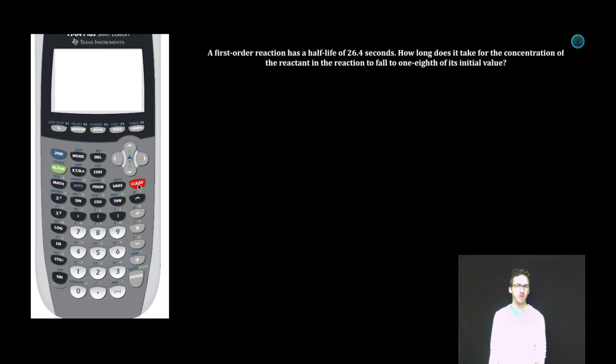Example number two. A first-order reaction has a half-life of 26.4 seconds. How long does it take for the concentration of the reactant in the reaction to fall to one-eighth of its initial value? All right, now there are a couple different ways you can do this. Here's the way that I find the easiest, and one that I think you should consider, especially because you'll have to answer some of these questions without a calculator on the multiple choice section.